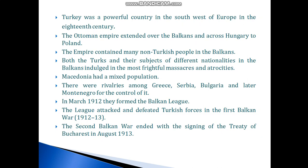Turkey was a powerful country in the southwest of Europe in the 18th century. The Ottoman Empire extended over the Balkans and across Hungary to Poland. The empire contained many non-Turkish peoples in the Balkans, and both Turks and their subjects of different nationalities indulged in massacres and atrocities. Macedonia had a mixed population, and there were rivalries among Greece, Serbia, Bulgaria, and later Romania for control of it.